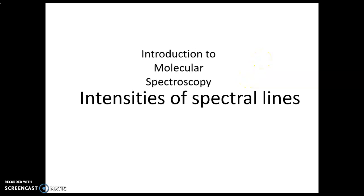In the last video we talked about the different energy levels. No transition will take place if the energy of the photon does not match the separation between the different energy levels. The energy levels can be electronic, vibrational, rotational, or in the presence of an external magnetic field, we can have spin energy levels. In crystals we can talk about translational energy levels, but in molecules we don't talk about translational energy levels.